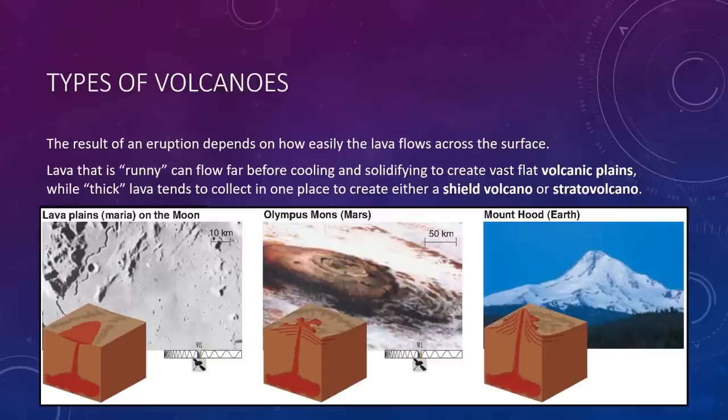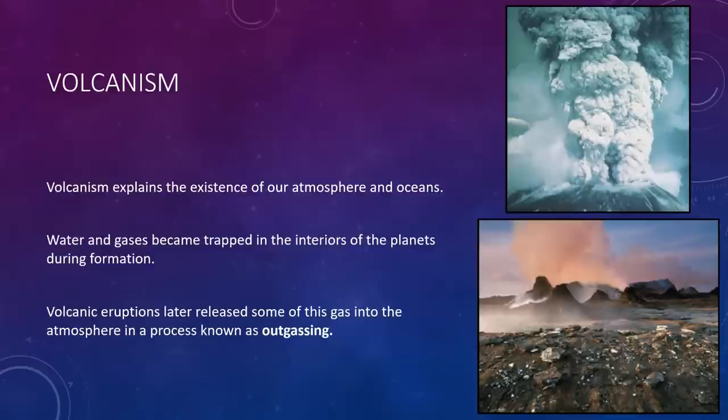The thickest lavas cannot flow very far before they solidify, and therefore they build up tall. These create steep stratovolcanoes, like you see here with Mount Hood on the right. Examples include Mount Fuji of Japan, Mount Kilimanjaro, and Mount Hood in Oregon.